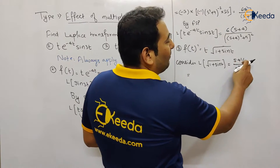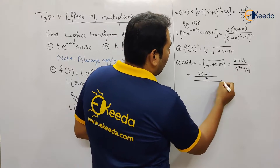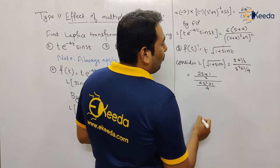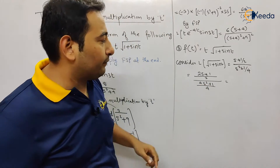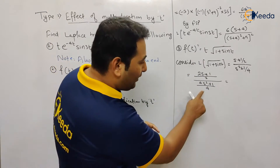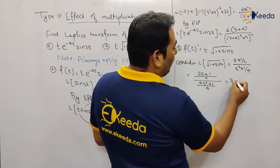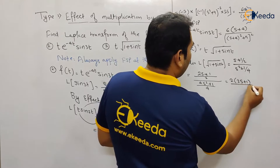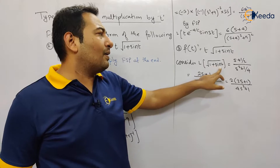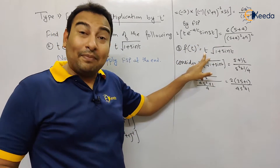If you take LCM — two is the LCM for the numerator and four for the denominator — this simplifies to (2s + 1) / (4s² + 1). The two in the denominator and four in the numerator cancel to give 2, so the solution of Laplace of √(1 + sin(t)) is (2s + 1) / (4s² + 1). I'm simplifying this further before applying the effect of multiplication by t.